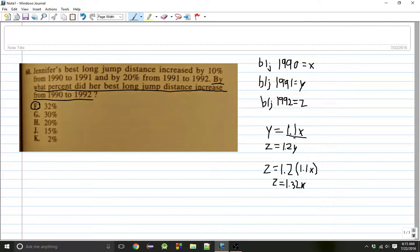So, we know that Y equals 110% of X, and we know that Z equals 120% of Y. And then we substitute in those values into the equation, and we get 1.32X. 1.32 is 132% of X. So, that's the same thing. 1.32 times X is the same thing as 132% of X, which means that from 1990 to 1992, the long jump distance increased by 32%.